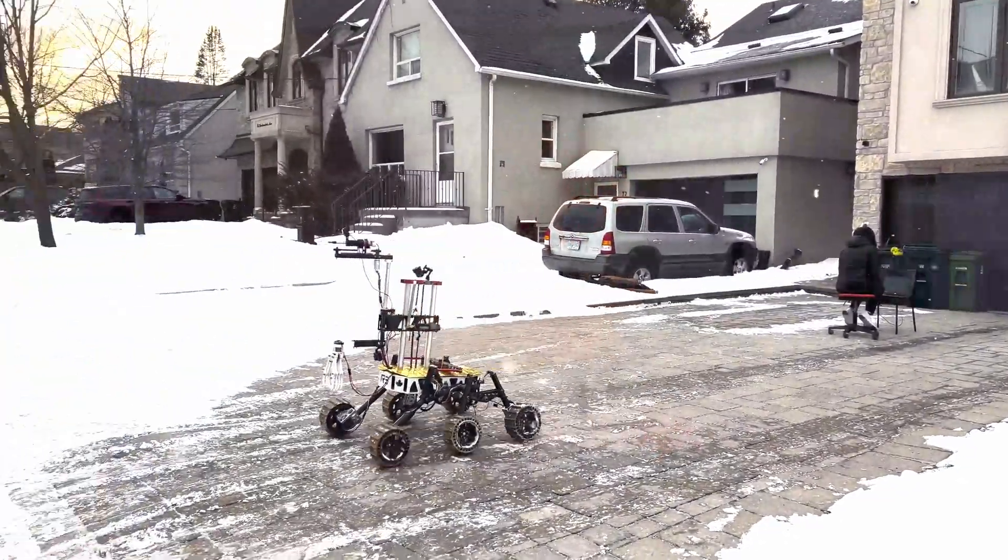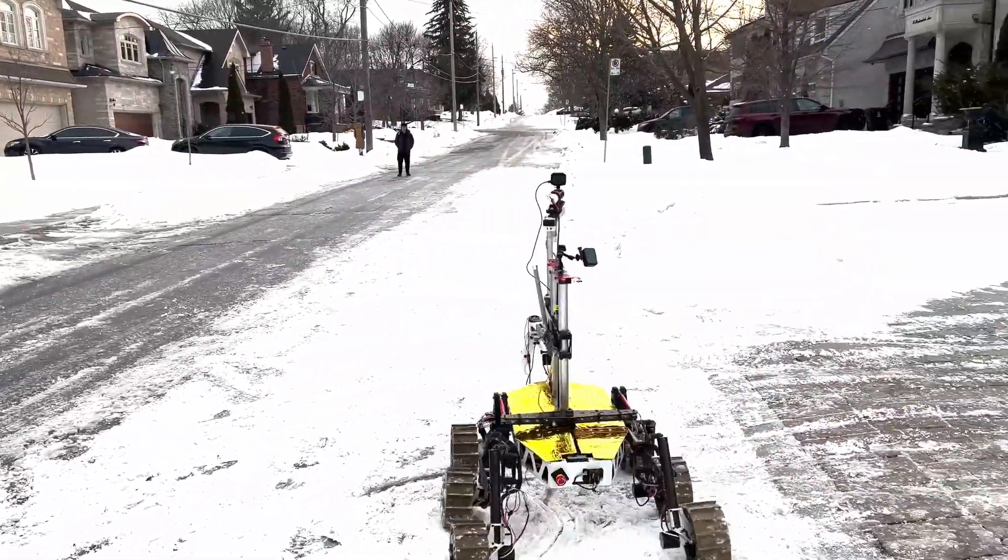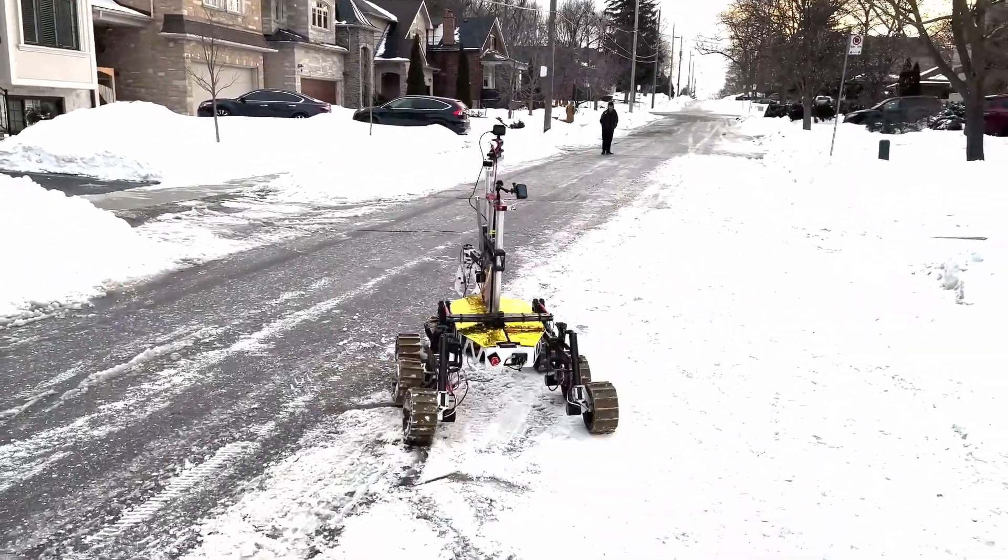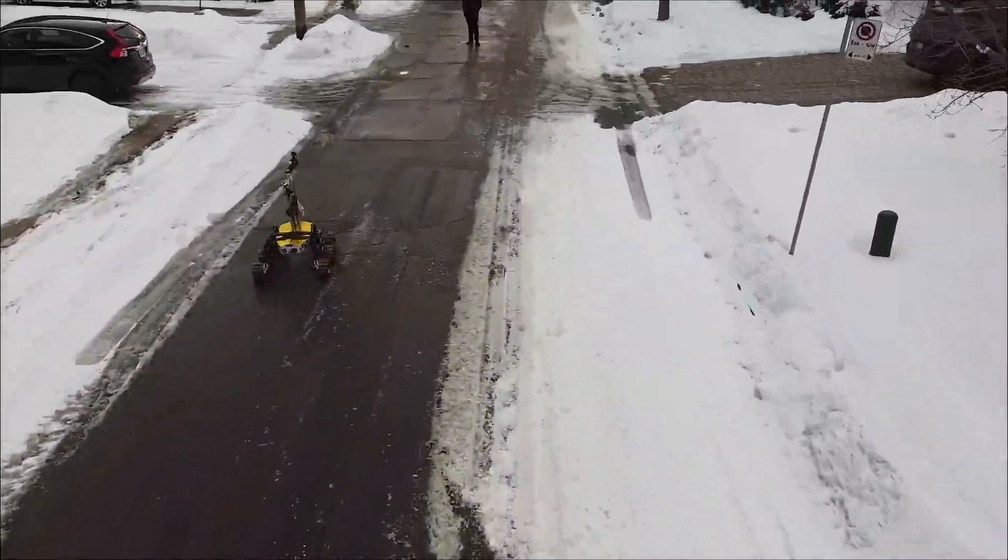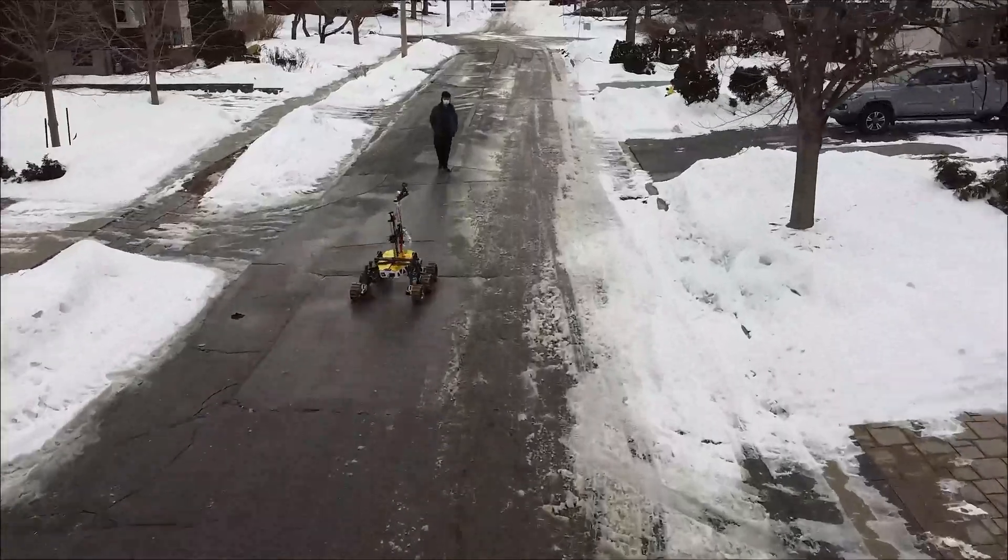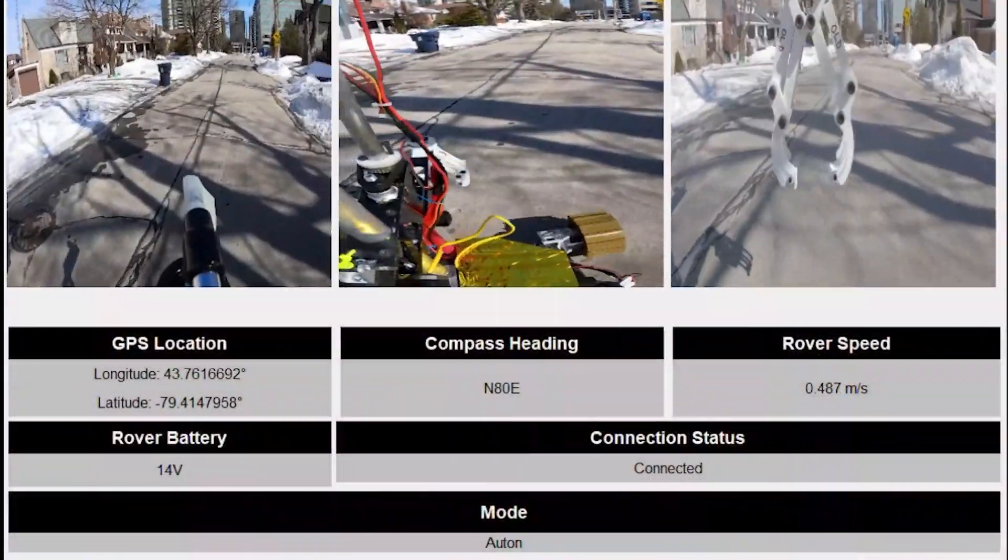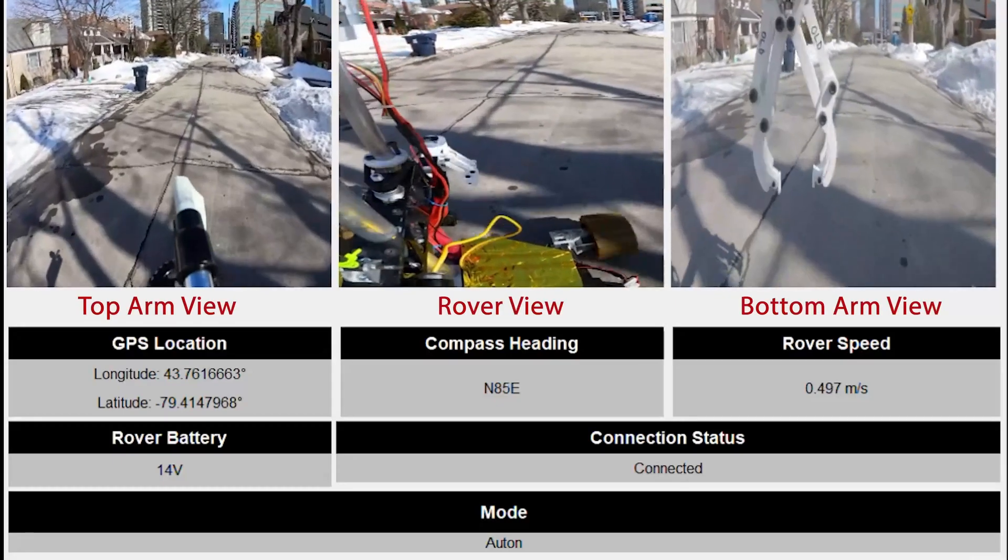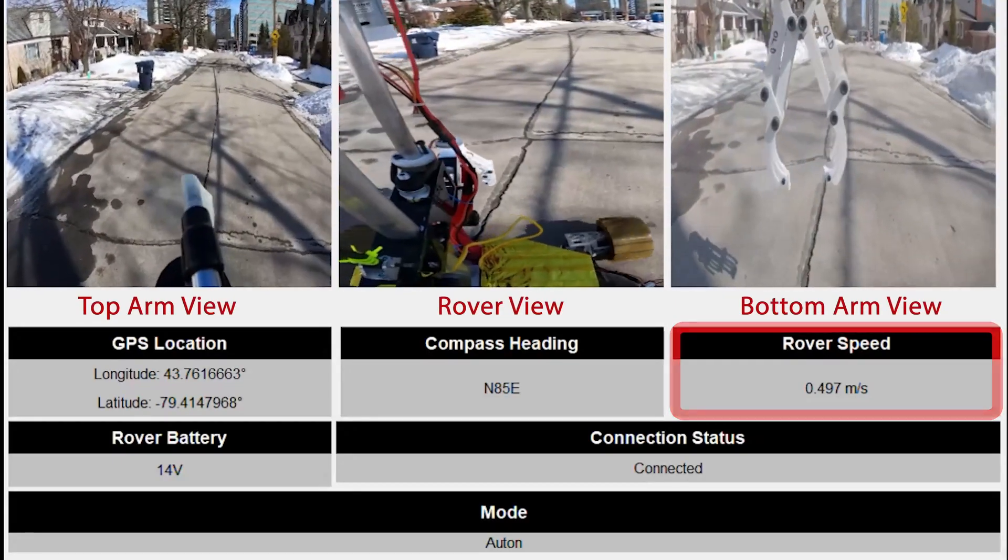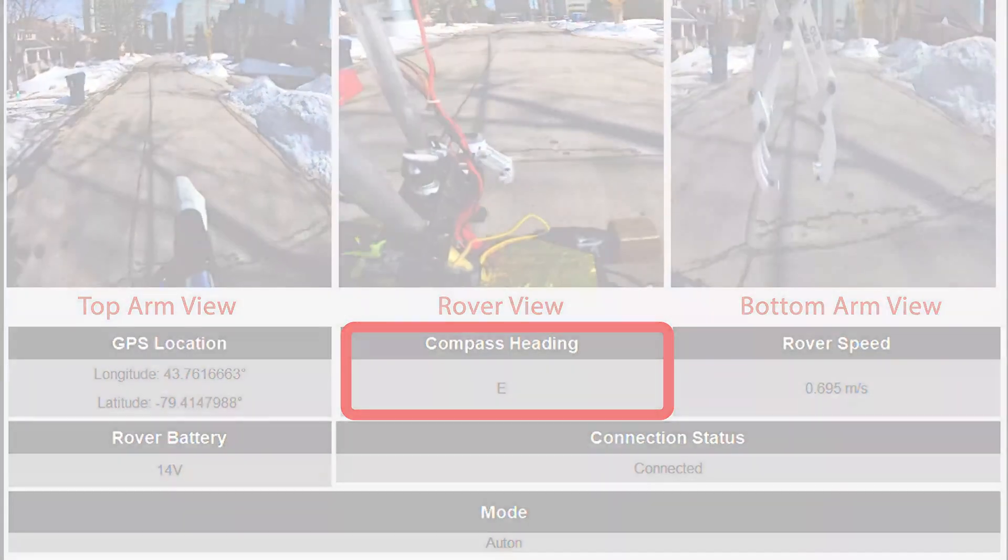A standard gamepad controller is used for intuitive control of the rover for both drive and arm manipulation. In addition, the rover utilizes numerous cameras and sensors, which are streamed to the driver via 900 MHz and 2.4 GHz bands. This information is displayed on the GUI, which can stream multiple camera feeds simultaneously, along with the rover's speed and the compass bearing to aid the driver in navigation.